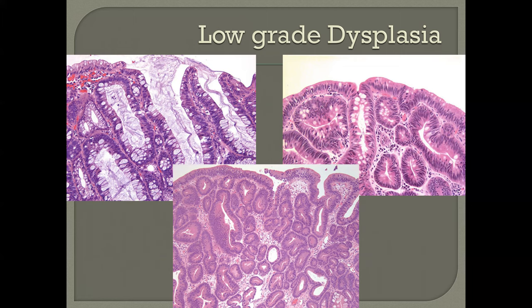Examples of low-grade dysplasia: the changes involve the crypts and extend to the surface. We don't have every goblet cell replaced, but it looks somewhat like a villous adenoma. We see some architectural changes, loss of mucin, stratification, a little complexity to the architecture, and a slight increase in N/C ratio with loss of cytoplasm — features that most observers would put into the low-grade dysplasia camp. One image begins moving toward the high-grade camp because of architectural crowding and variability in size of some glands, though it still looks mostly like a tubular adenoma.